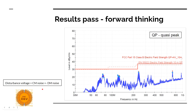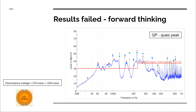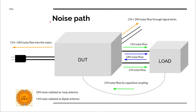Let's see a result that failed this test. Result failed — forward thinking. You can see how much emission you can have above the limits line. This was a device that was badly designed. You can see peaks — narrow-band emission — and also broadband emission. It took a lot of effort to lower this emission. That is why for radiated emission and conducted emission, you need to think before the prototype is done, so use rules that are applied for EMC when designing your device.